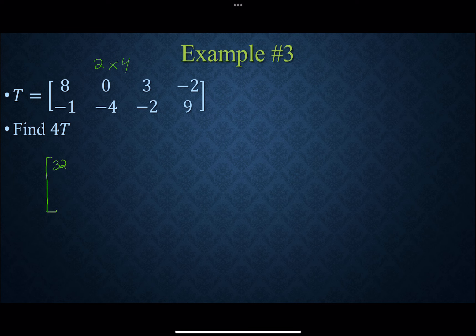So we would get 32, 0, 12, negative 8, negative 4, negative 16, negative 8, and 36. And that's our value of matrix 4T. Simple distributive property to each of the individual elements.